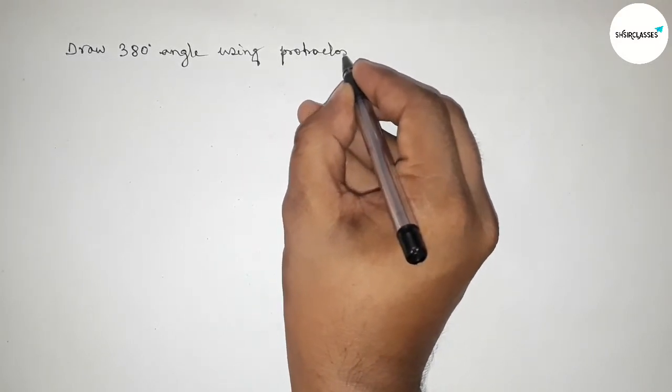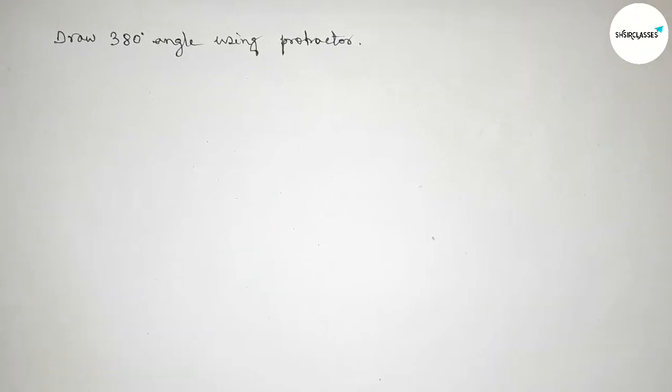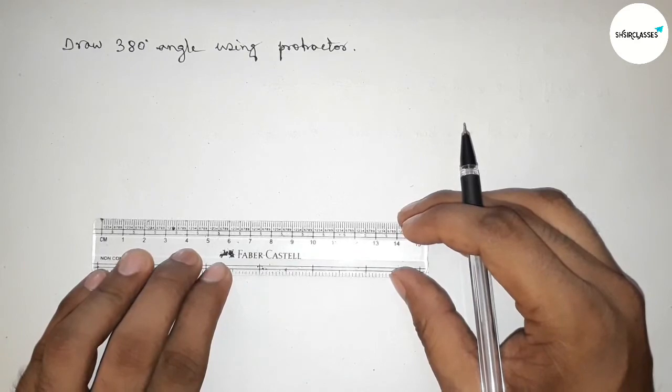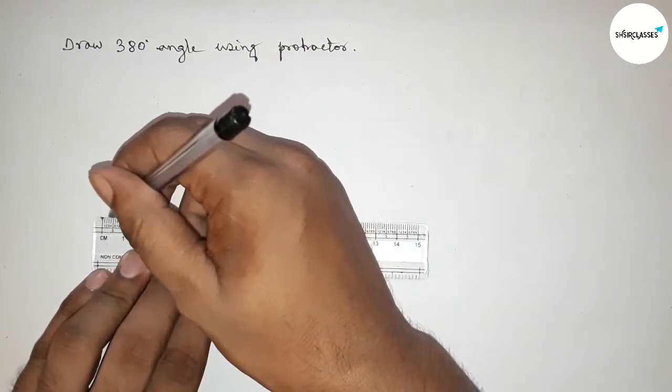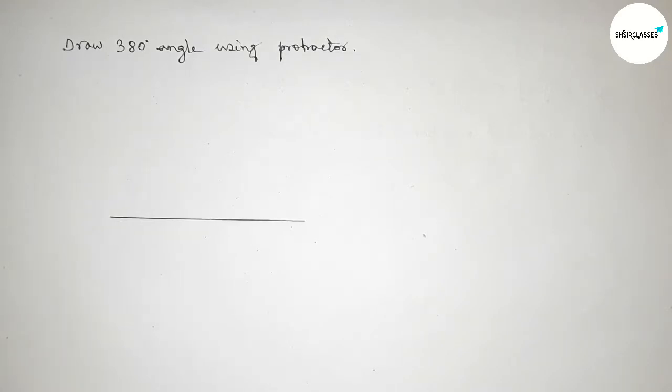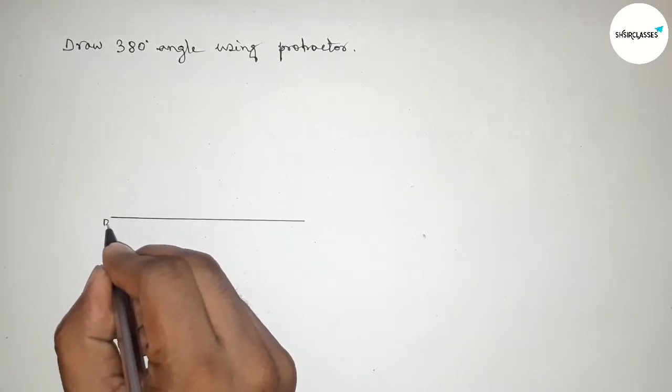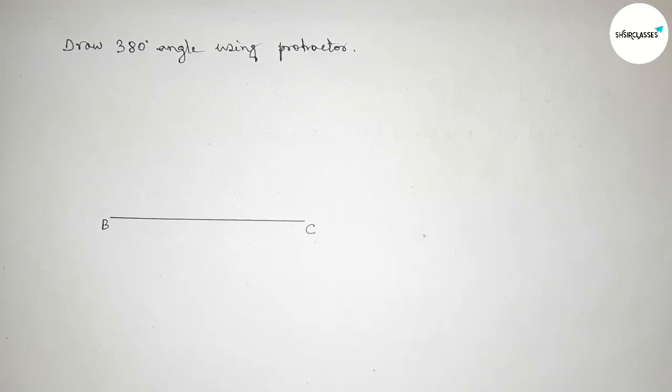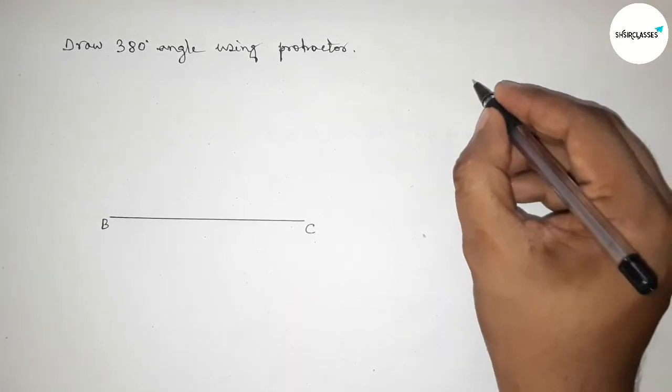First of all, we have to draw here a straight line of any length. So first drawing here a line and taking here point B and here C.